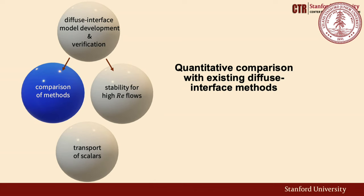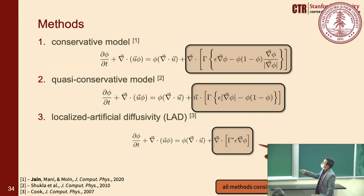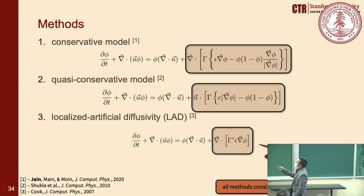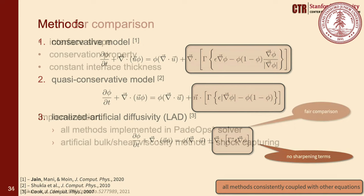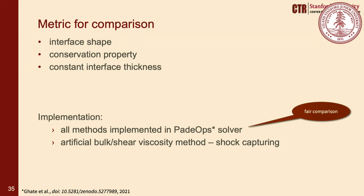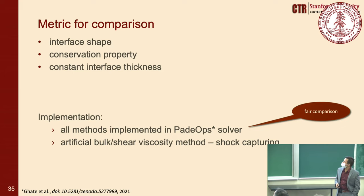Next is the quantitative comparison section. The three methods compared are: our conservative model, the quasi-conservative model by Shukla where the regularization term is not in conservative form, and the localized artificial diffusivity (LAD) method, which adds localized diffusion terms around the interface with no sharpening terms. All methods are consistently coupled with other equations and implemented in the PADEOPS solver for fair comparison, with additional bulk shear viscosity for shock capturing.